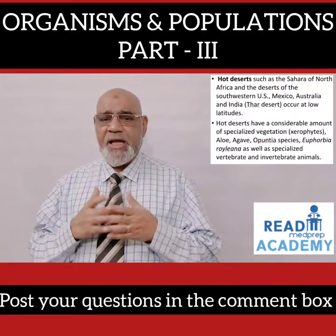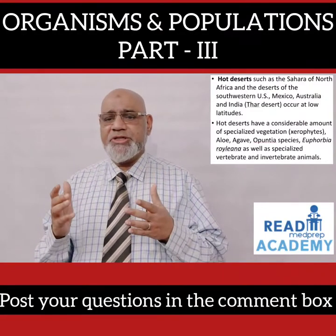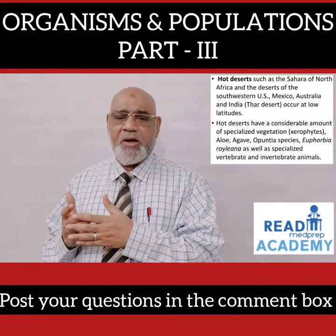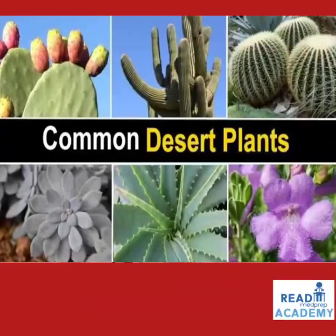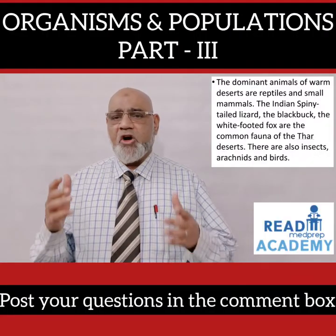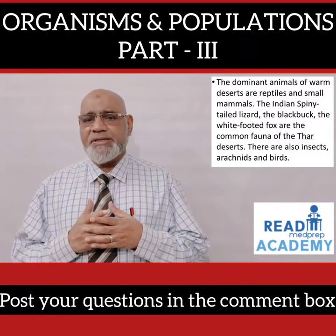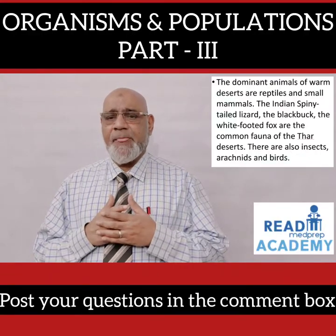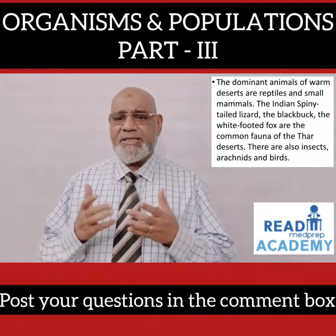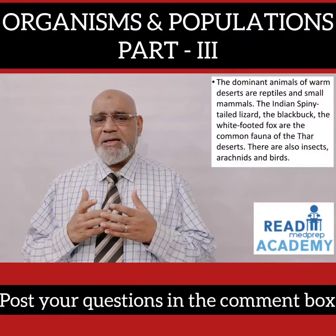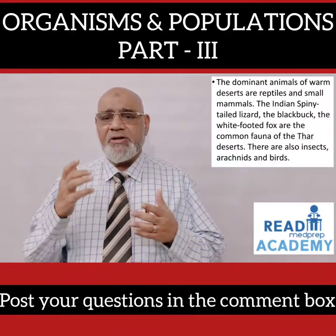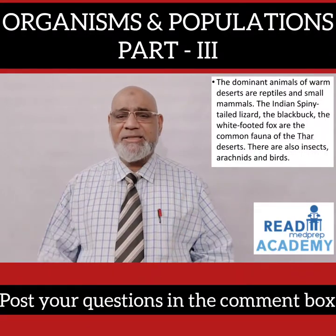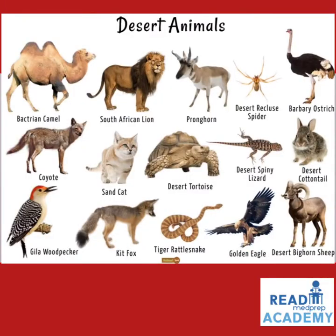Hot deserts have a considerable amount of specialized vegetation, mostly xerophytes — Aloe, Agave, Opuntia species, Euphorbia, and Calligonum — as well as specialized vertebrate and invertebrate animals. The dominant animals of warm deserts are reptiles and small mammals. The Indian spiny-tailed lizard, the blackbuck, and the white-footed fox are common fauna of the Thar Desert. There are also insects, arachnids, and birds.